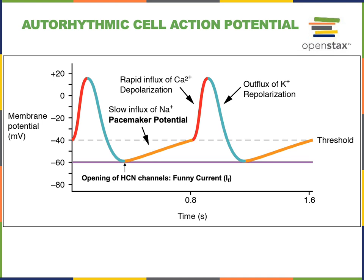Because this channel is activated by hyperpolarization rather than depolarization, it led to the term 'funny current' to describe the ion flow through it. 'Cyclic nucleotide-gated' tells us the HCN channel is regulated by the cyclic nucleotide cyclic AMP, which provides a mechanism for the autonomic nervous system to regulate heart rate.